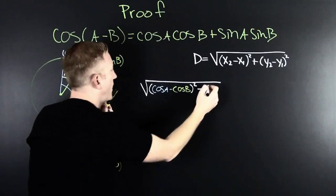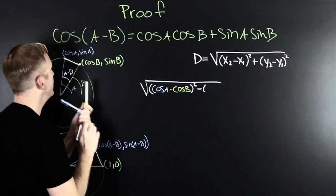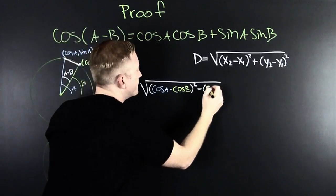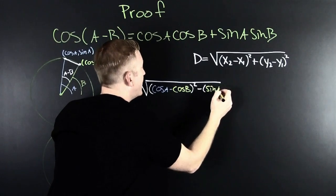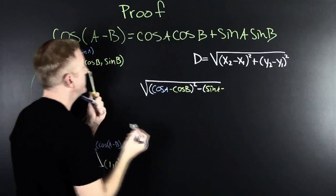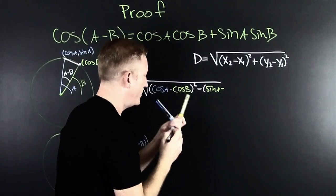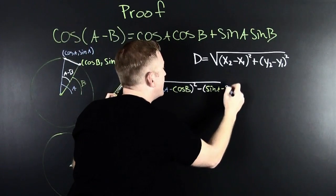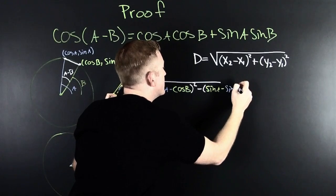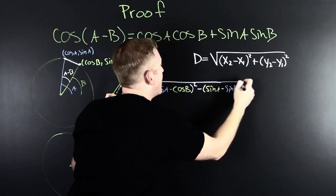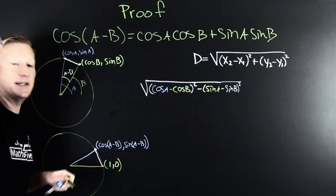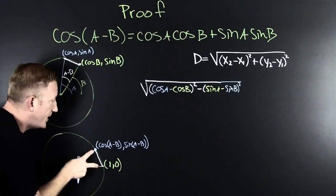And we're going to subtract off the sine of A minus the sine of B. My colors got switched, but I think you know what I'm talking about. The sine of B squared, that guy right there. And then that's going to be equal to this distance right here.